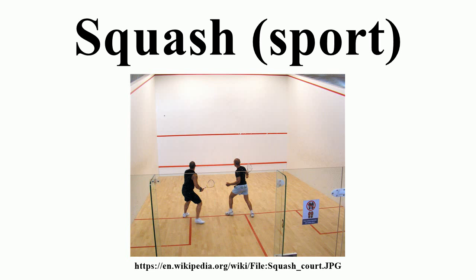The use of stringed rackets is shared with tennis, which dates from the late 16th century, though squash is more directly descended from the game of rackets from England. In rackets, instead of hitting over a net as in sports such as tennis, players hit a squeezable ball against walls. Squash was invented in Harrow School out of the older game rackets around 1830, before the game spread to other schools, eventually becoming an international sport.